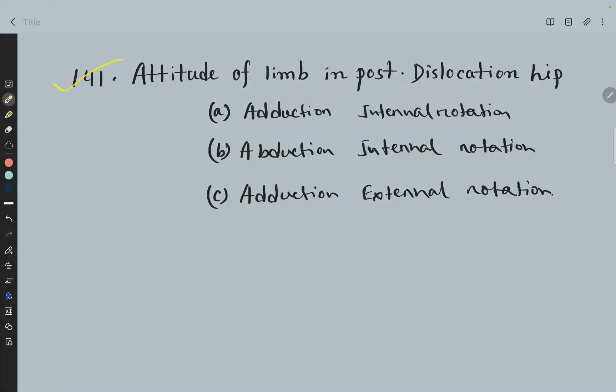Question 141: Attitude of limb in posterior dislocation of hip. Options are: A, Adduction and internal rotation; B, Abduction and internal rotation; C, Adduction and external rotation. And the right option is Adduction and internal rotation.